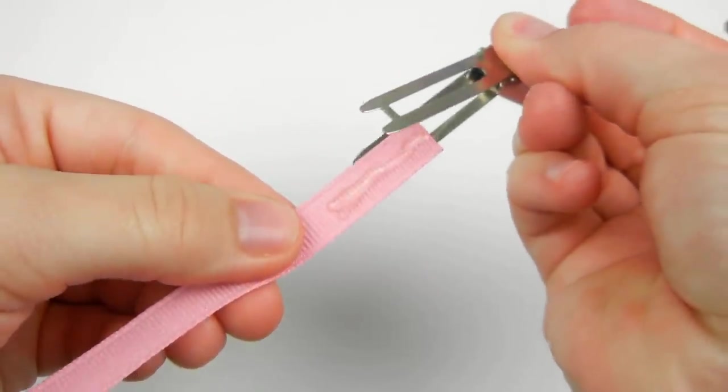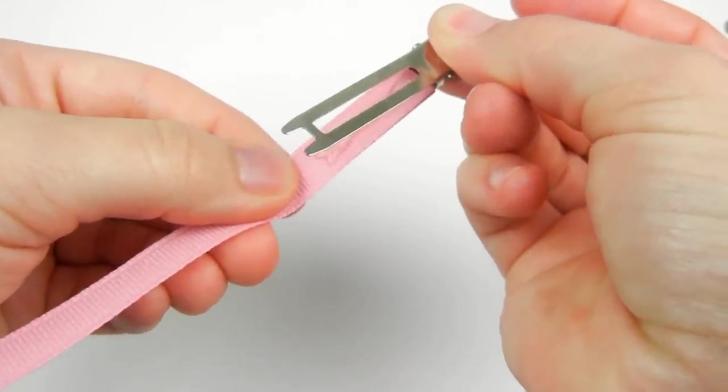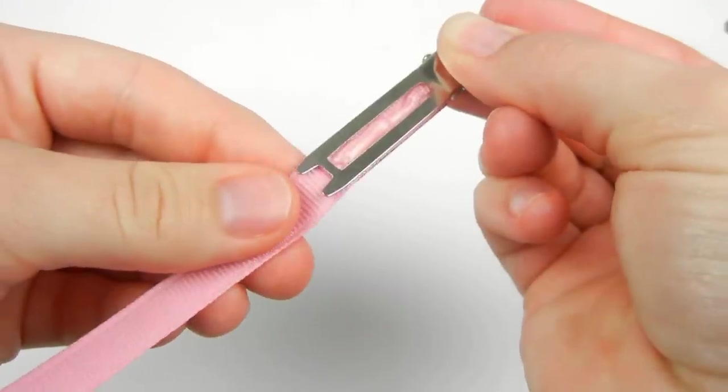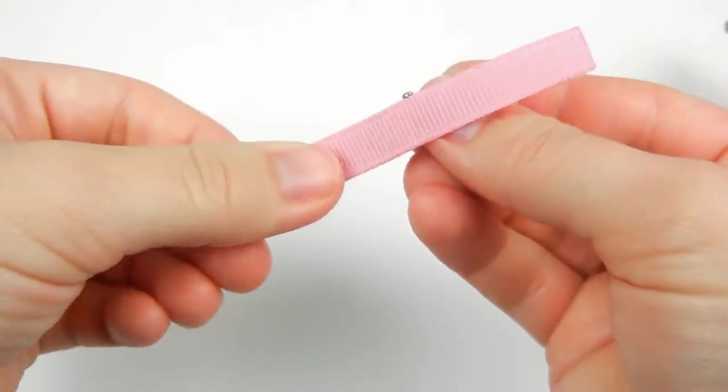Open it up. Bring your ribbon inside. Make sure that it's straight. Bring it down. And then line your clip on the top just by smoothing it over.